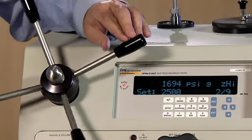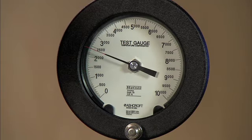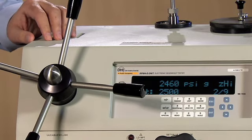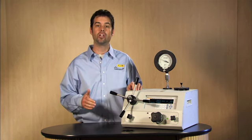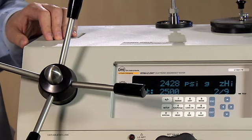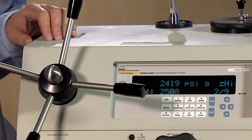So let's go ahead and use the variable volume to get up to 2,500 psi. We're near 2,500 psi. Now typically in a gauge calibration you want to get to a cardinal point, so we're going to use the variable volume to get right to that 2,500 psi.